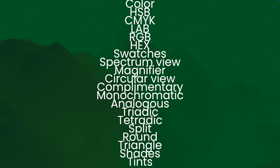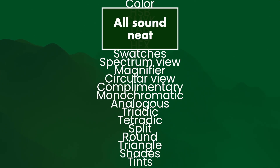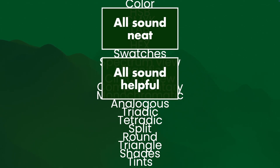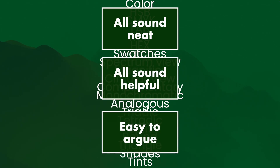So if we look at that giant feature list, it all sounds really, really neat and helpful. It's very easy to argue that you need all of this — all those features look neat, other people have them, they sound nice, so why shouldn't we just have them?